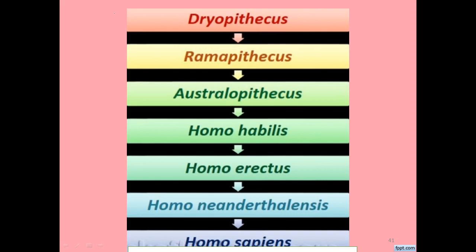Dryopithecus showed a semi-erect posture, Ramapithecus showed erect posture. The evolutionary progression went from quadrupedal in Dryopithecus to bipedal locomotion in Homo sapiens. The evolutionary history of man was traced with the help of fossils found over time: Dryopithecus evolved into Ramapithecus, which evolved into Australopithecus, then Homo habilis, Homo erectus, Neanderthal Man, and finally Homo sapiens.